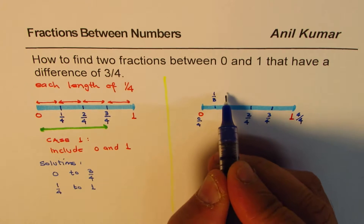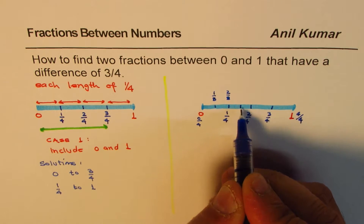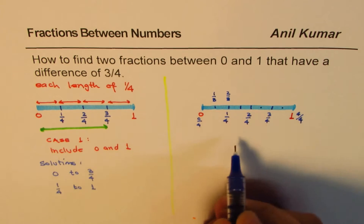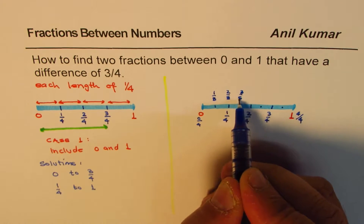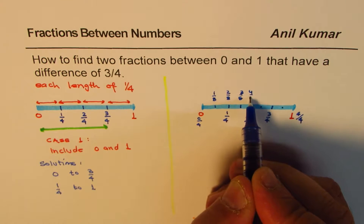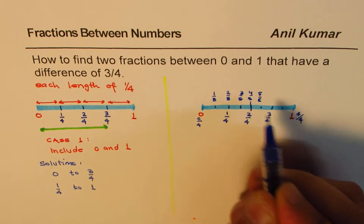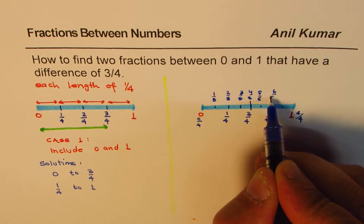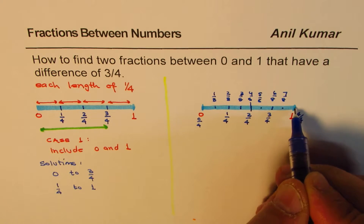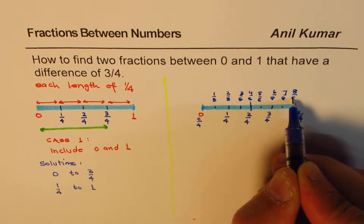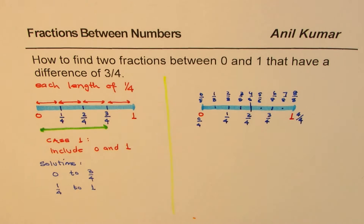Half of 1 fourth becomes 2 eighths. Let me divide it into small portions: 3 eighths, 4 eighths — that is the half. Then 5 eighths, 6 eighths, 7 eighths, and the last one is 8 out of 8 which is 1. This is 0 out of 8. Now can you tell me what two fractions between 0 and 1 will have a difference of 3 fourths?